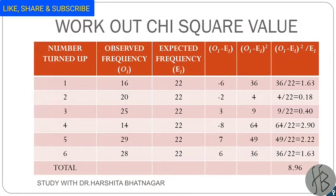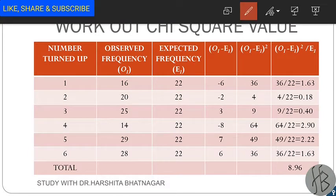Now we will draft a table for working out the chi-square value. Draw the table with 6 columns with headings: number turned up, observed frequencies, expected frequencies, O minus E, (O minus E) squared, and (O minus E) squared divided by expected frequency. Write the numbers in the first column, the given frequencies in the second, and the expected frequencies we calculated in the third.